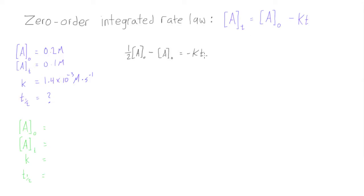And in this case, we're technically doing T at one half. So what we can do here, one half minus one, we're going to have negative one half A naught is equal to negative K times our half-life, T half. All right, get rid of the negative signs, and what we're going to end up with here is going to be A naught over two, over 2K. And that's just going to be equal to our half-life.